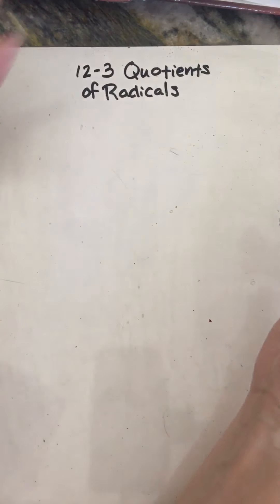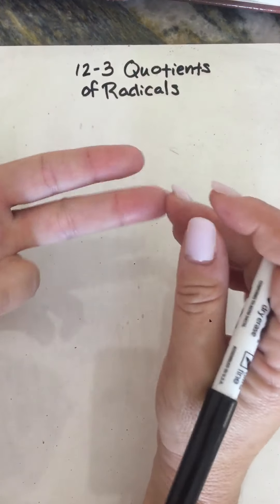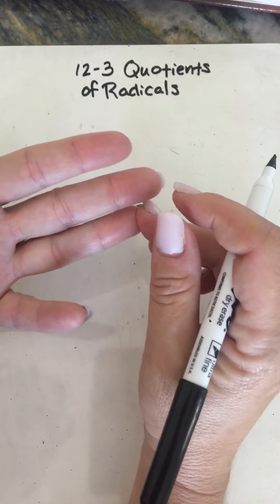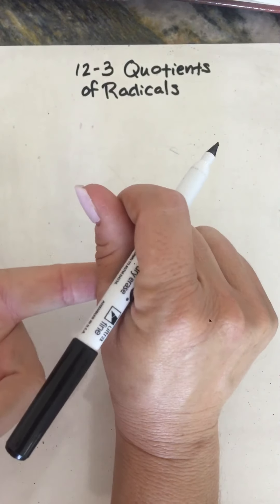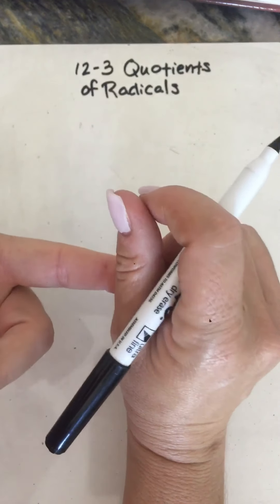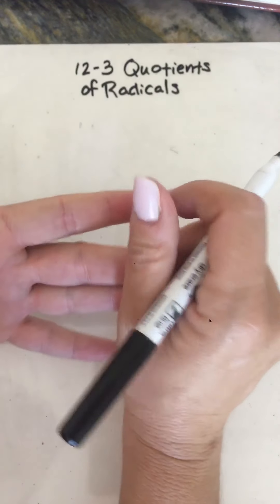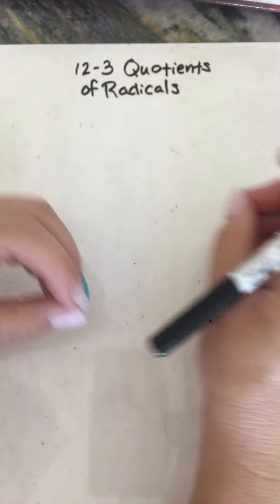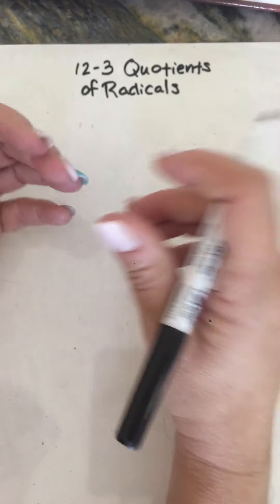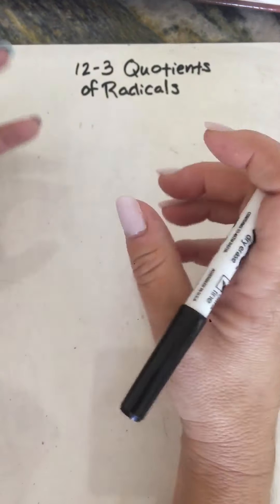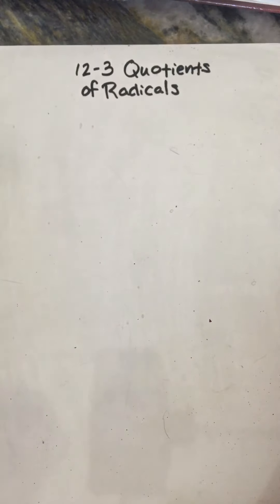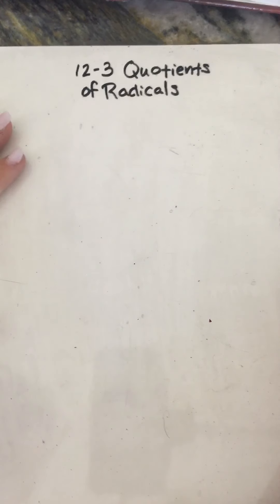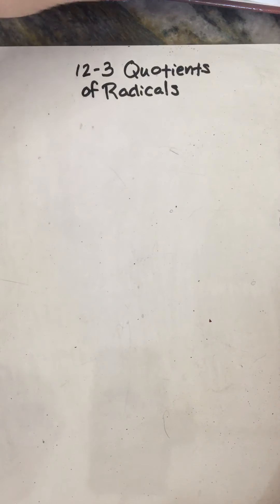So we did multiplication. We did addition and subtraction. We had to first simplify, and then for addition and subtraction, you had to make sure you had like radicals. And then for multiplication, you just had to make sure that all perfect squares were pulled out. Quotients or division is going to be a little different.